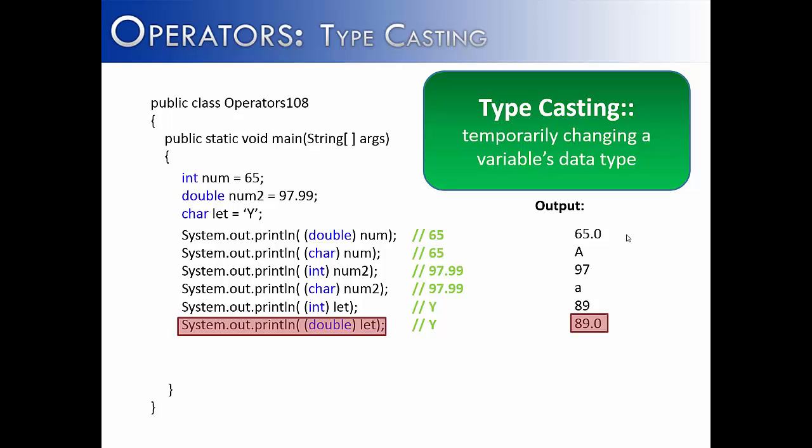Something very similar happens when I cast it into a double. Capital Y is 89, and then it appends the .0 at the end to indicate it is a double, not an int.